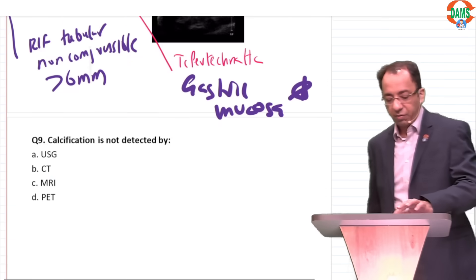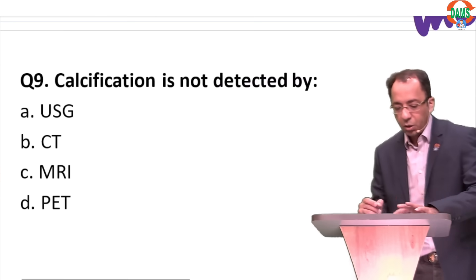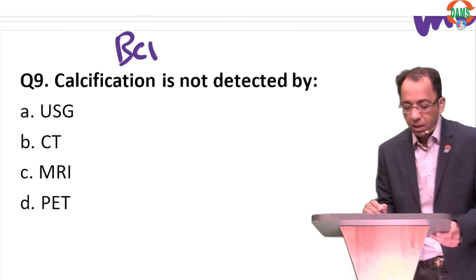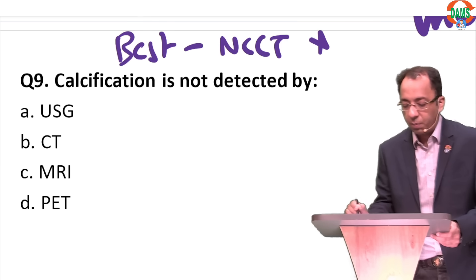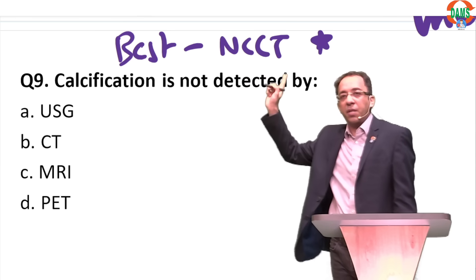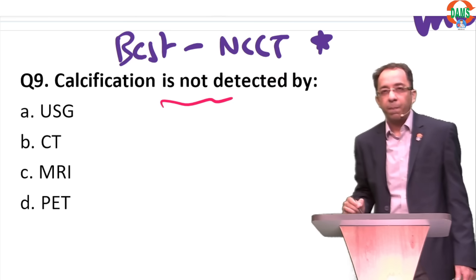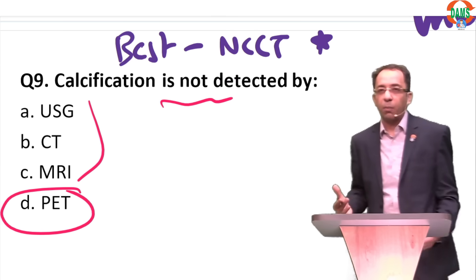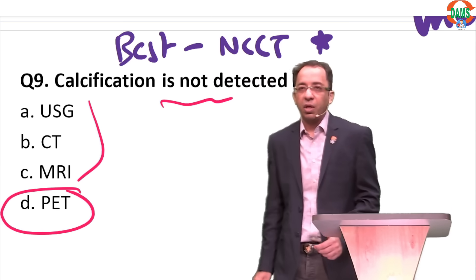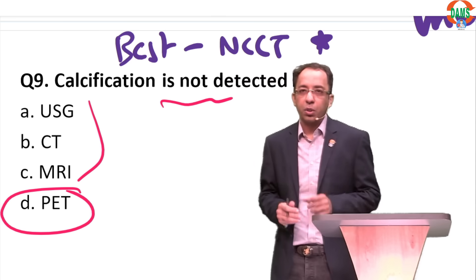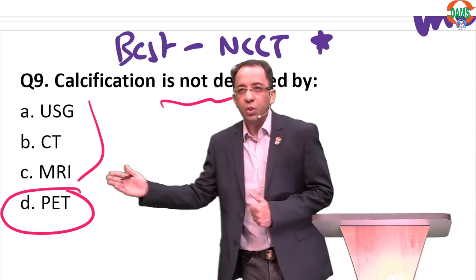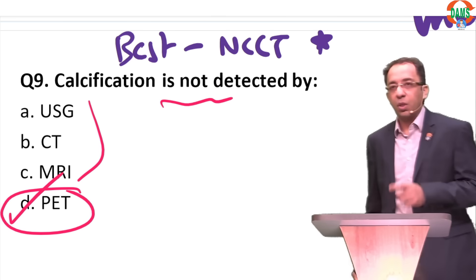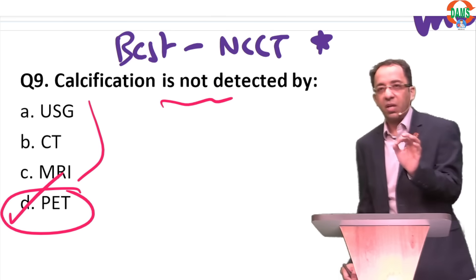Important question: calcification is best detected by NCCT — this is a previous FMG question. If the question says NOT detected by, then the answer is PET scan. PET scan uses FDG — fluorodeoxyglucose — which is based on metabolism and is a functional investigation. It cannot show structural findings like calcification. The other options (X-ray, CT, ultrasound) are structural investigations, so they can detect calcification. If the question asks best detected by, mark NCCT.